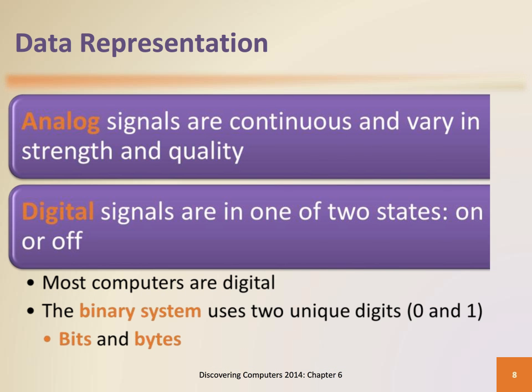Most computers are digital. They recognize only two discrete states: on and off. The computer uses a binary system because the binary system has just two unique digits, 0 and 1, called bits. A bit, short for binary digit, is the smallest unit of data the computer can process.